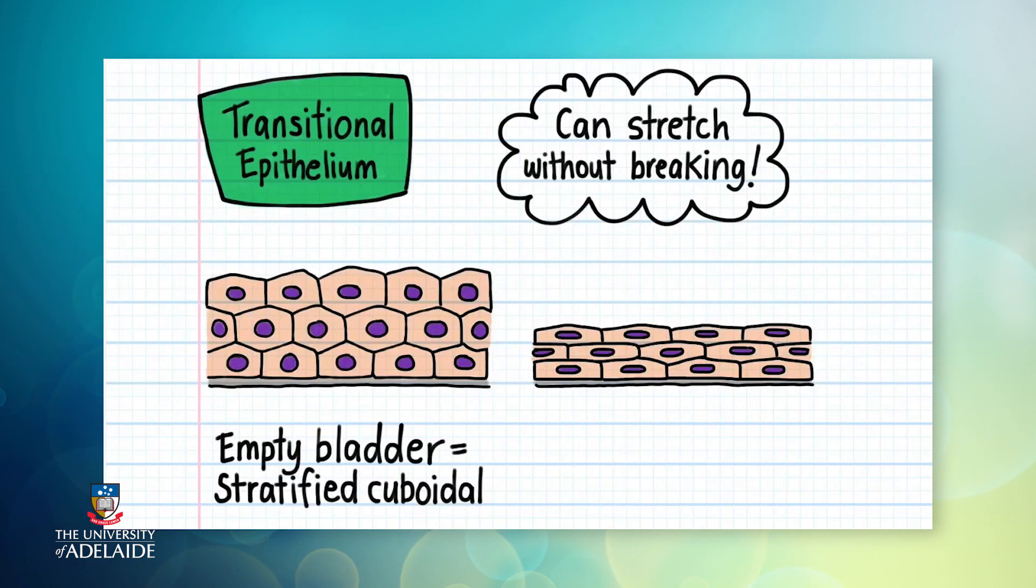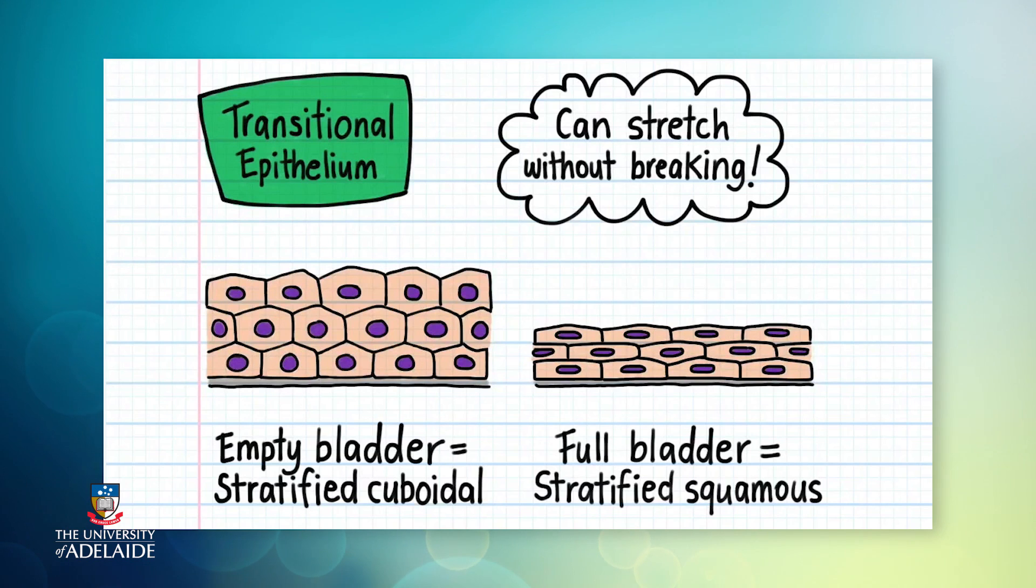In an empty bladder, the cells are cuboidal in shape, but as the bladder fills with urine, the epithelial cells stretch and become squamous in shape. It's because the cells change shape that we call this epithelium transitional.